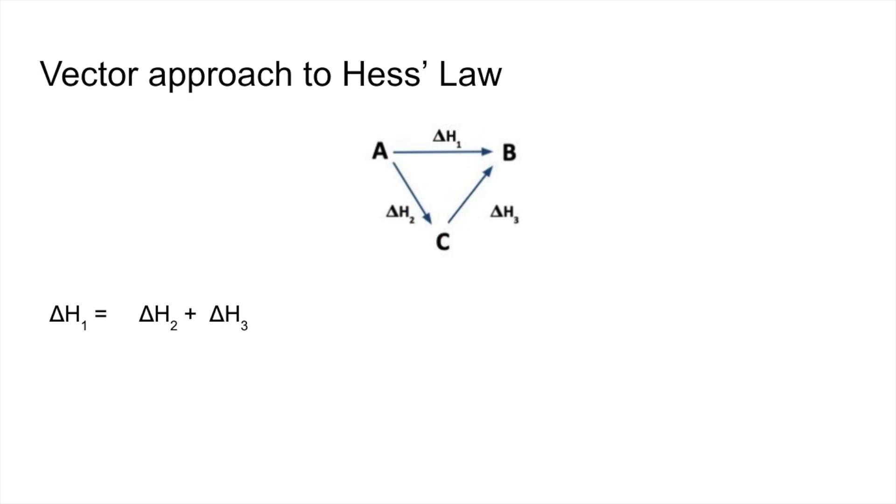Now, what if we had to calculate ΔH₂? That's A to C. Another way to get from A to C is to go to B and then B to C. If we look at this route, this arrow is going in the correct direction, so that's fine. This one is going in the wrong direction, so we subtract that one. So it would be ΔH₁ minus ΔH₃.